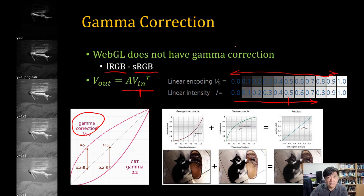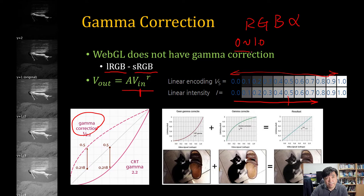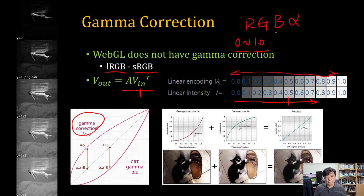We will use RGB color, and we will also have another channel — alpha. Alpha is opacity. In WebGL, we express the color and alpha from 0 to 1.0. WebGL does not have a built-in gamma correction function — gamma correction is the work of the application or the web browser. So we assume that gamma correction is automatically handled by the web browser or GPU engine, and we cannot control the gamma correction value in our WebGL coding.